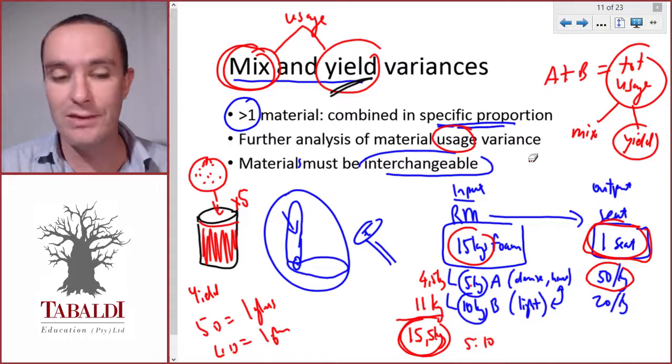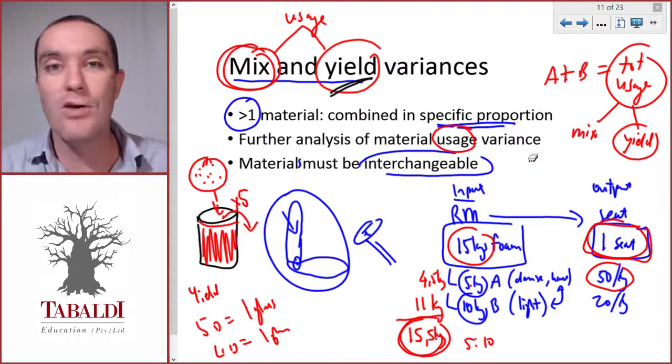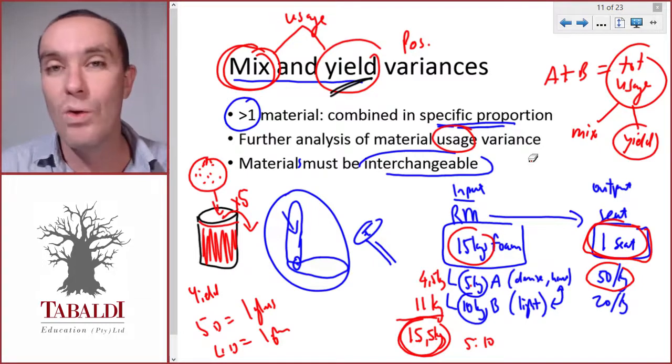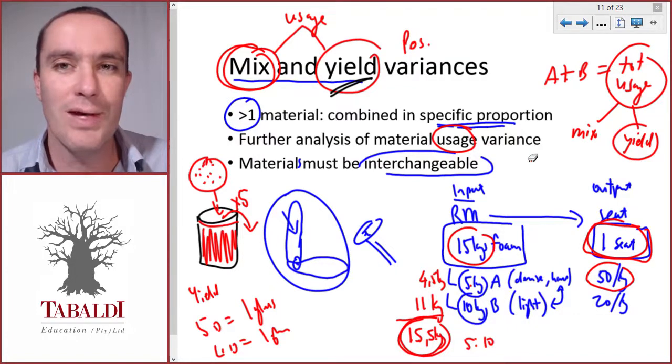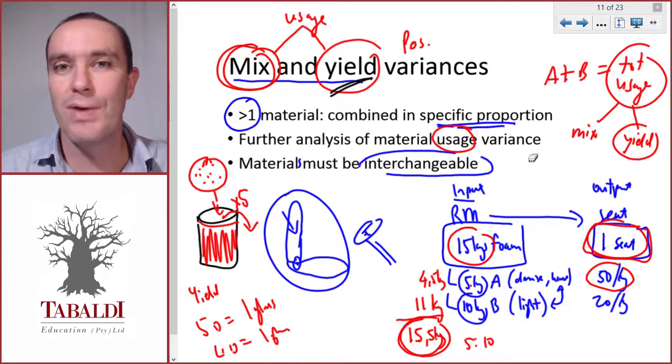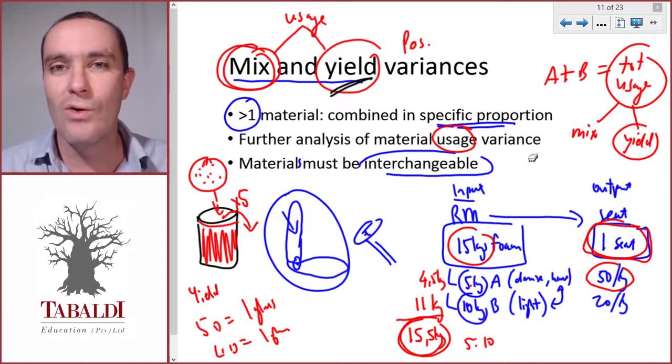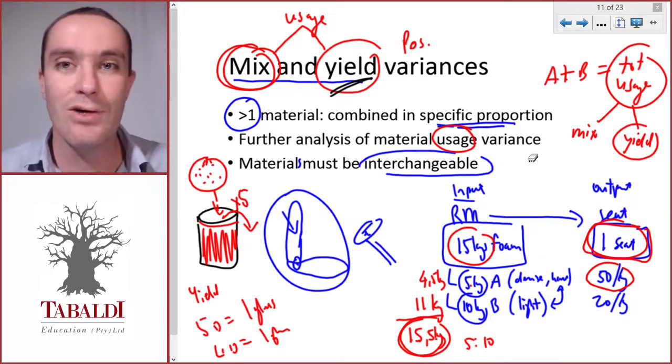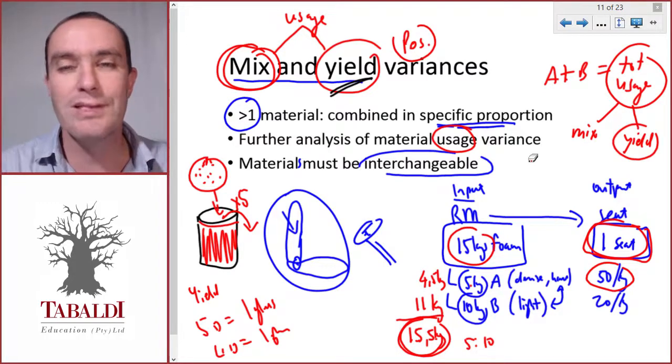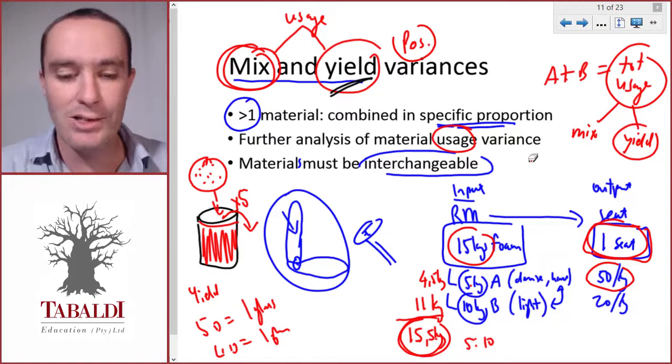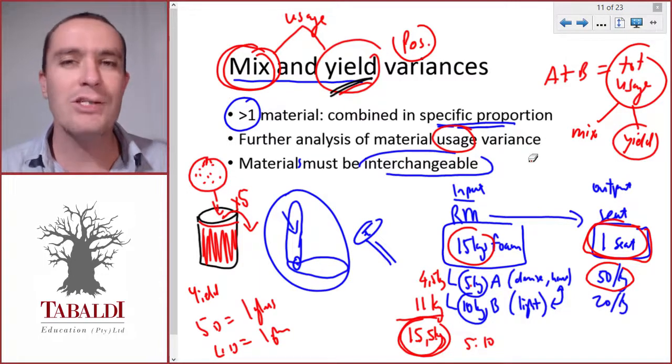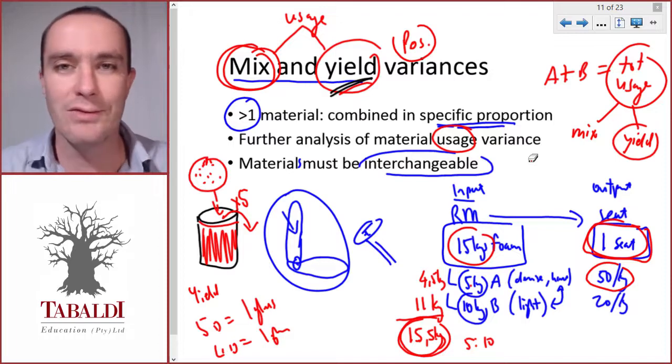If we use 5 of these new oranges, our glass would overflow - that's a positive yield, meaning we got more than we should have. Another example is shearing sheep: we might get 10 kilograms from one sheep, or if we feed them different food, we get 12 kilograms of wool per sheep. That's a positive yield - we increased the yield. Yield means the amount of output we get for a certain amount of input. Let's do an example to illustrate the mix and yield variances.